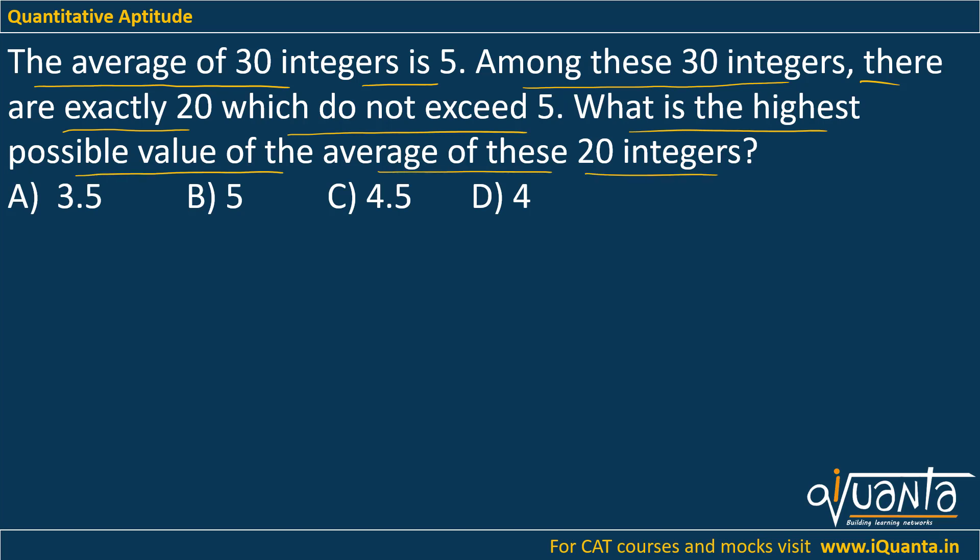So we've been given the average of 30 integers is 5. What will be the sum of those 30 integers? It will be 30 × 5, which gives us 150.